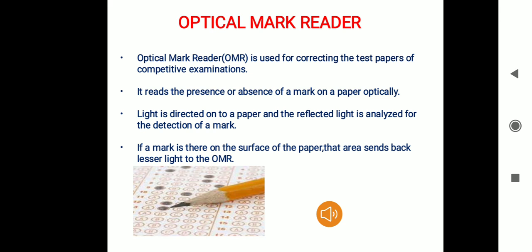Light will be directed from the optical mark reader onto the OMR answer sheet. Once the light reaches a mark, it reflects back and the reflected light is analyzed for detection. If a mark is present on the surface of the paper, that area sends back lesser light to the optical mark reader. If a mark is not there, the area sends back more light. Depending on the intensity of reflected light, the presence or absence of a mark is detected, and the data is transferred to the computer for processing.